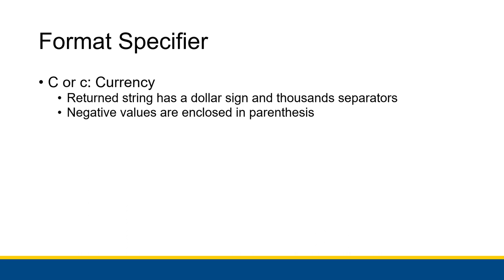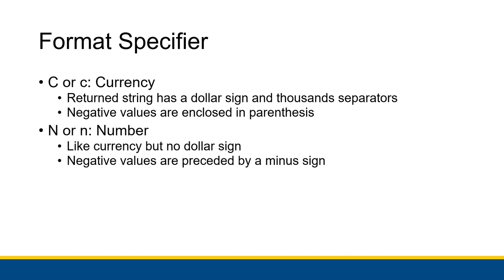There's the N format specifier, which is for number format. It's like currency, but no dollar sign. So there are thousandths separators, commas in every three digits. Negative values are preceded by a minus sign. There's no parentheses going on there, the way that we would normally expect to write numbers.